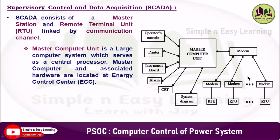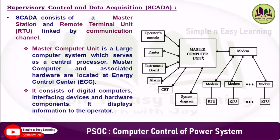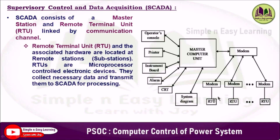SCADA consists of a master station, remote terminal unit, and a communication link. The master computer unit is a large computer system which serves as a central processor. This master computer unit and the associated hardware are located at the energy control center. It consists of digital computers, interfacing devices and hardware components, and displays information to the operator with the help of the CRT display.